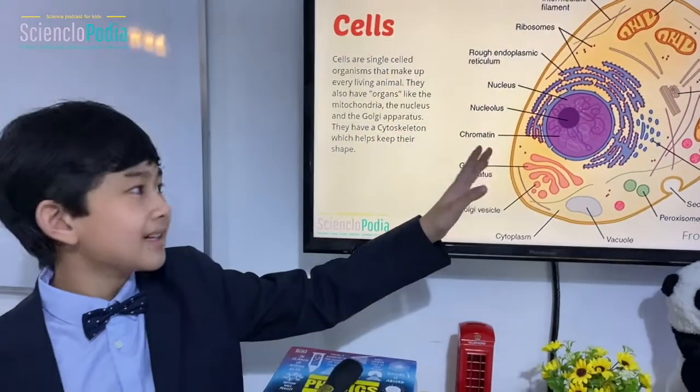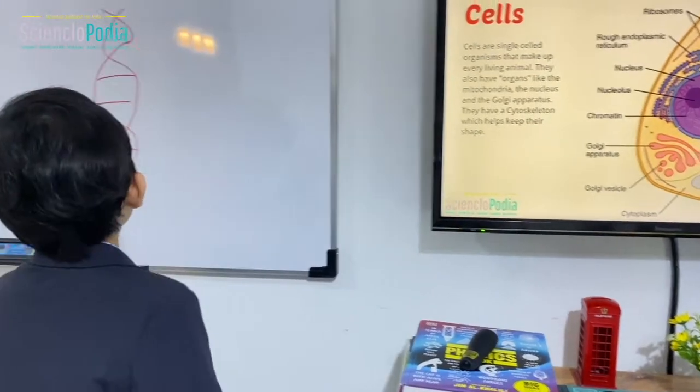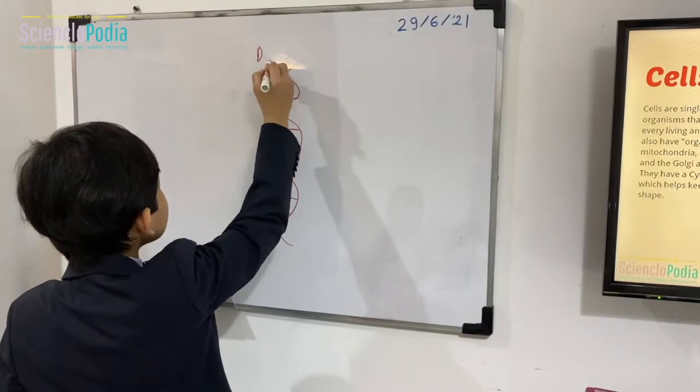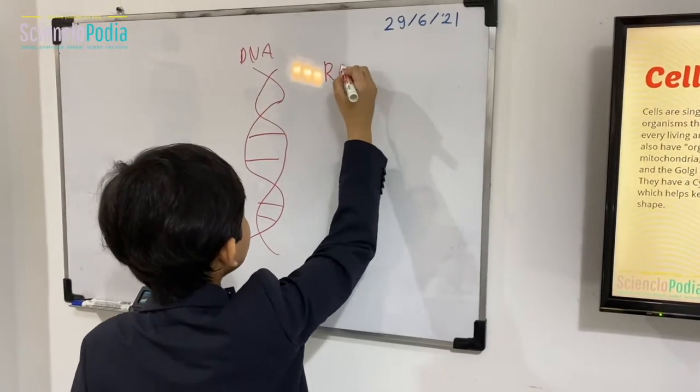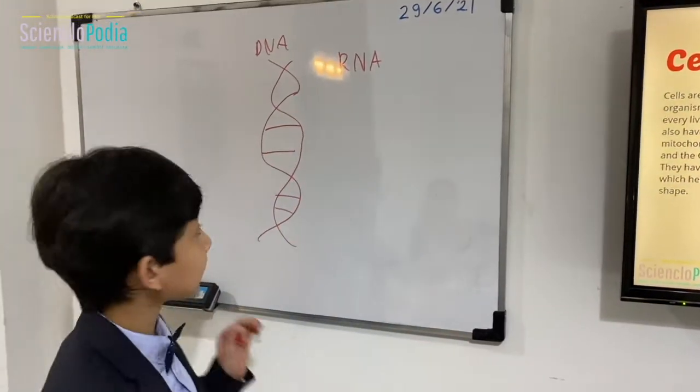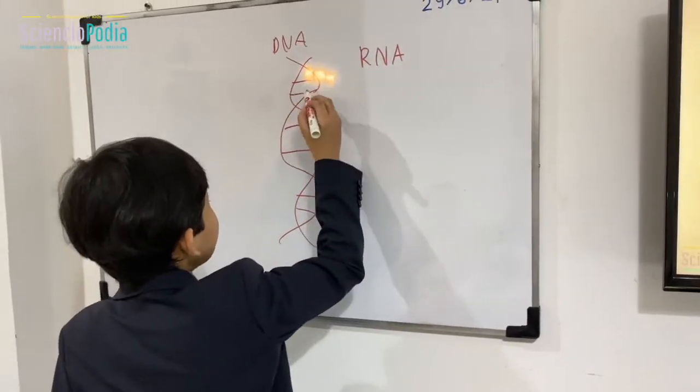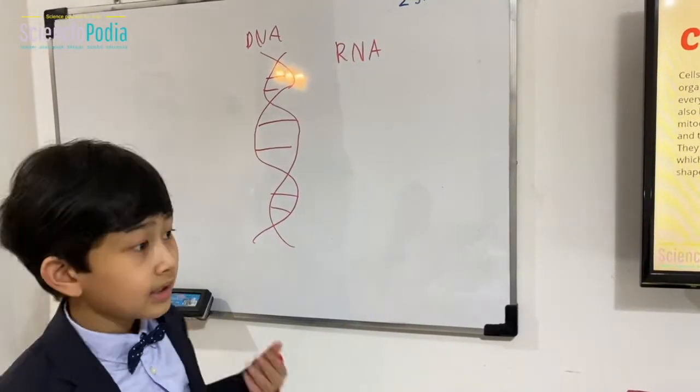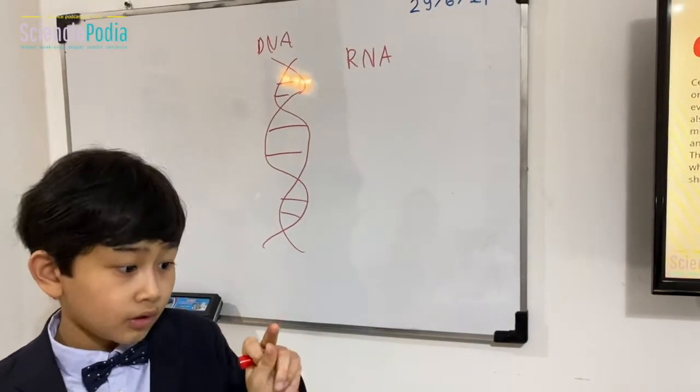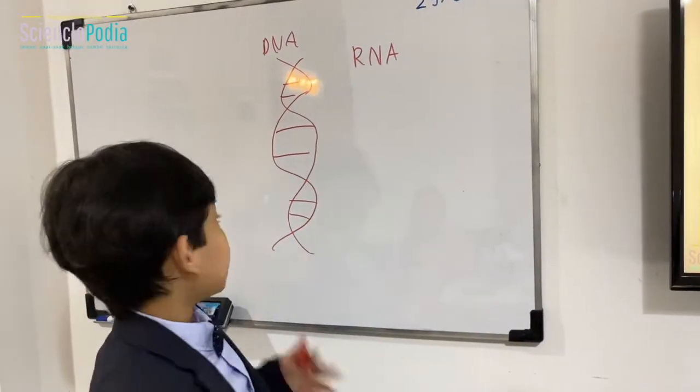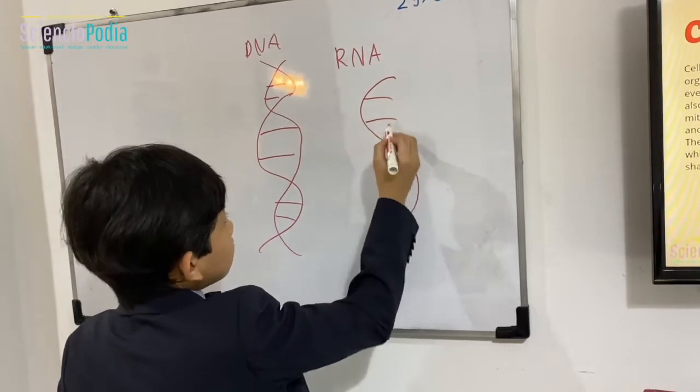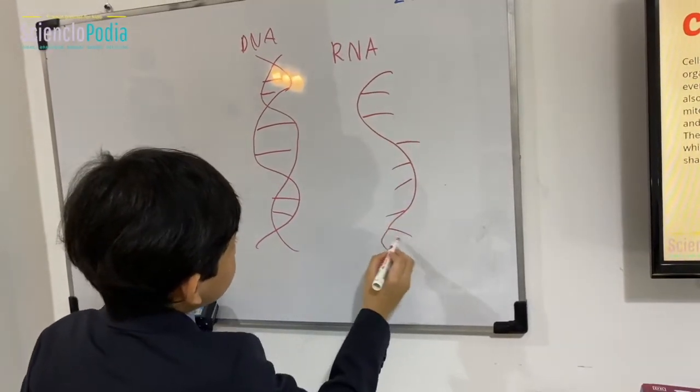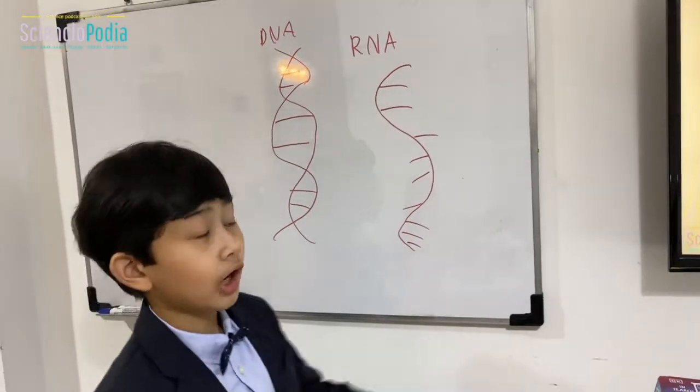From the nuclear pores there's something called RNA. RNA is kind of like DNA - that's DNA right there - but RNA is only one strand. DNA has two strands, but RNA only has one.